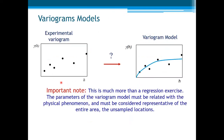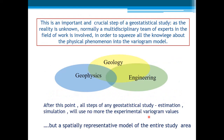Well, these last exercises were simple academic exercises intended to illustrate how important and crucial the choice of the variogram model is. It is important to come back to the previous lectures and note that the choice of a variogram model is much more than a simple regression exercise. The parameters of the variogram model must be related to the physical phenomena and must be considered representative of the entire area, including the unsampled locations. And again, this is an important and crucial step of a geostatistical study.